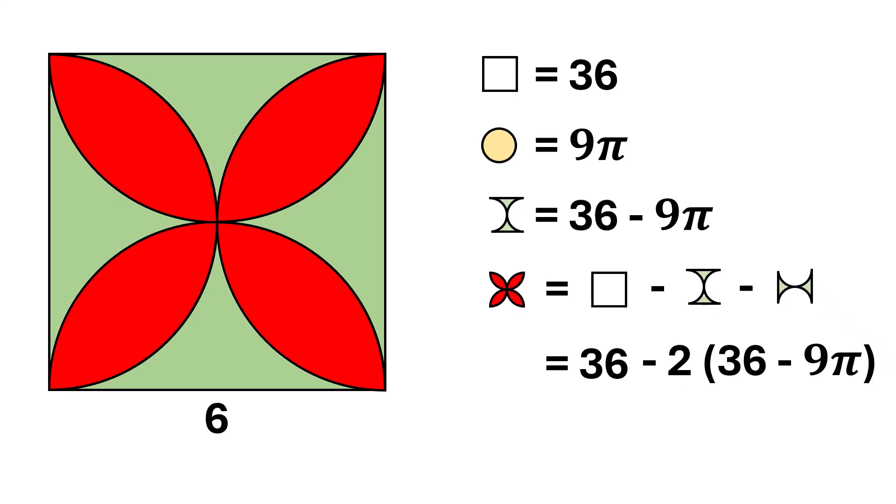Simplifying the expression, 36 minus 72 plus 9 pi. That gives us 9 pi minus 36 square units. And that's our final answer.